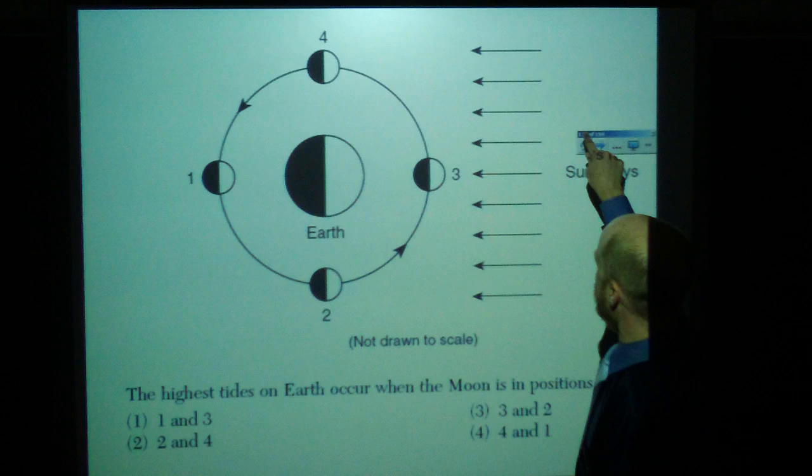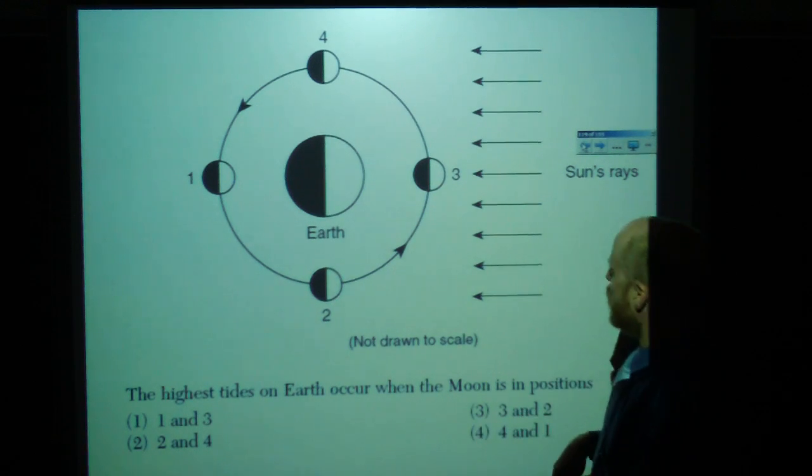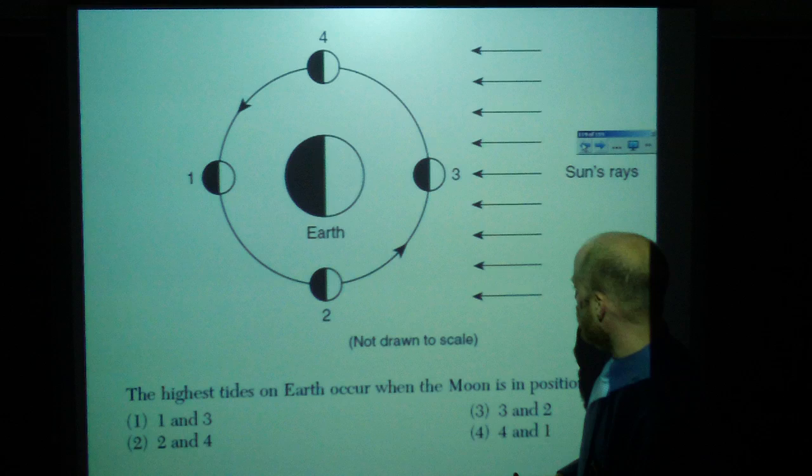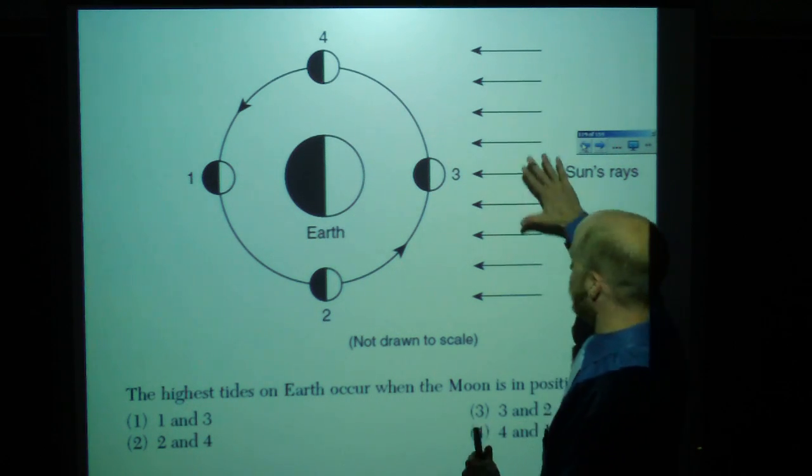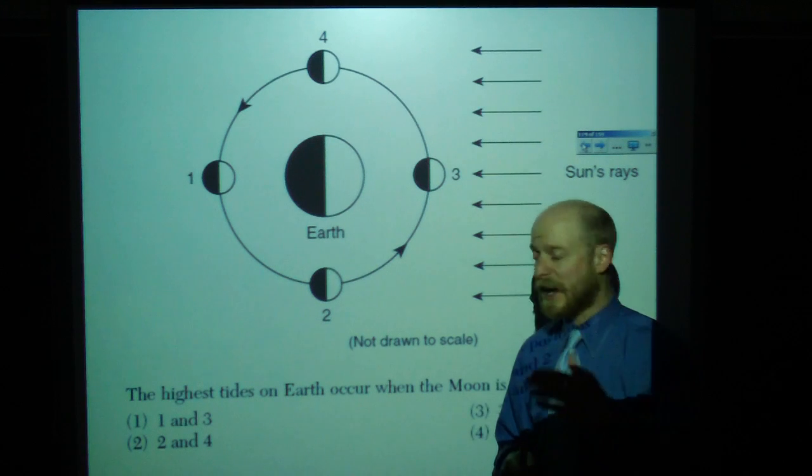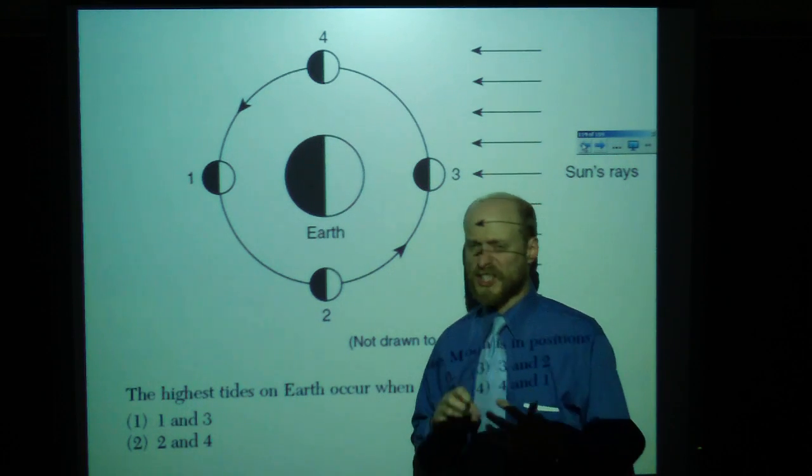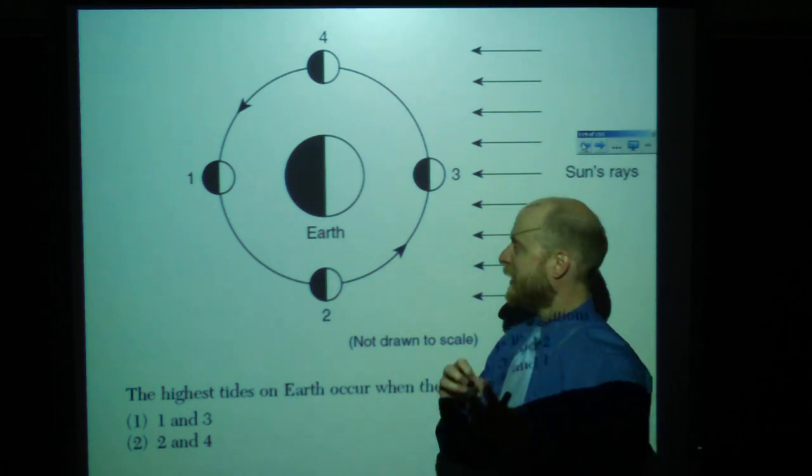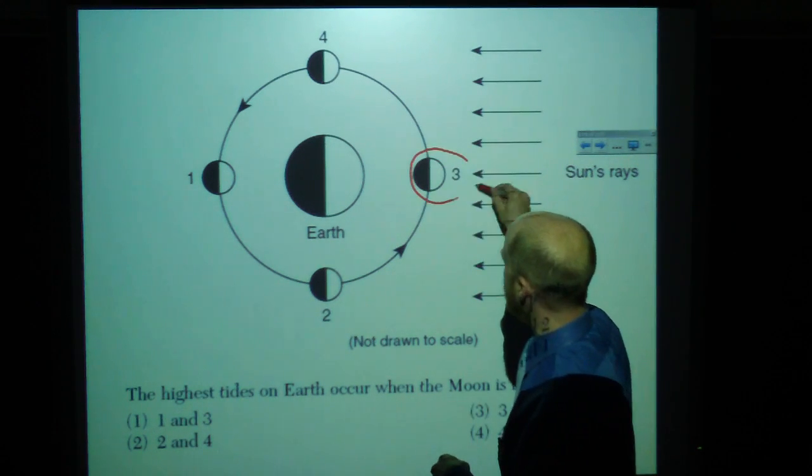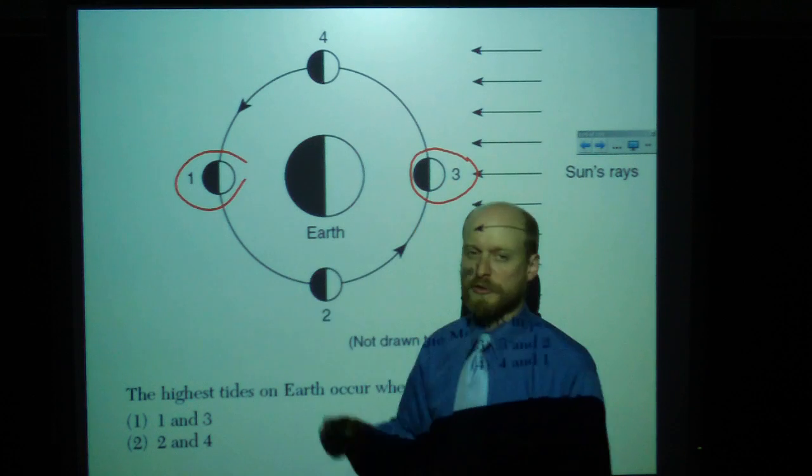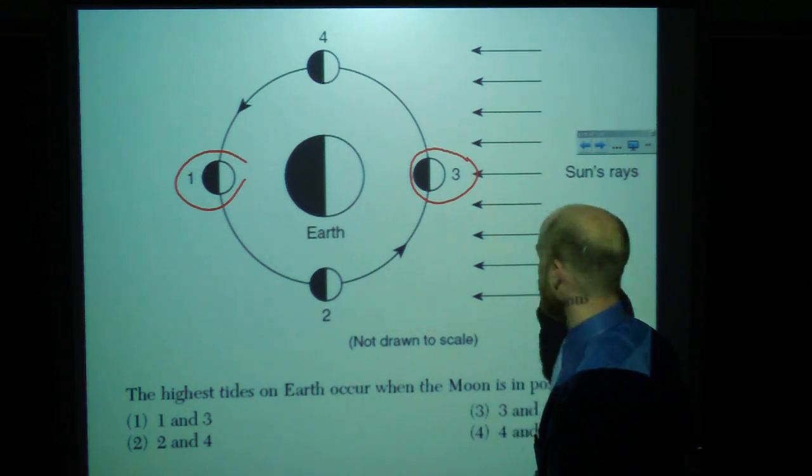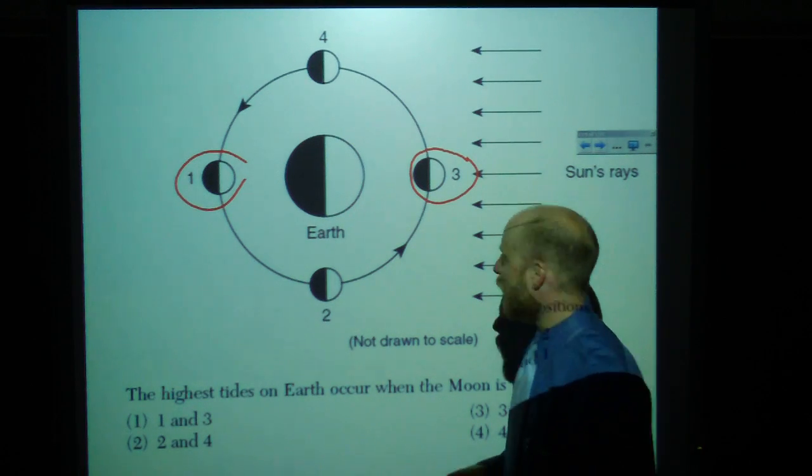This question. The highest tides on Earth are going to occur when the moon is in what positions? High tide. So here's the sun. Here's the moon. You're going to get a high tide. It's also called spring tide when the gravitational pull of the sun and the moon work together. So when they're kind of in a straight line, so it's going to be at 3 and 1, you're going to have those really high, high tides and really low, low tides because their gravity is all working in a line. And you know that it's called spring tides.